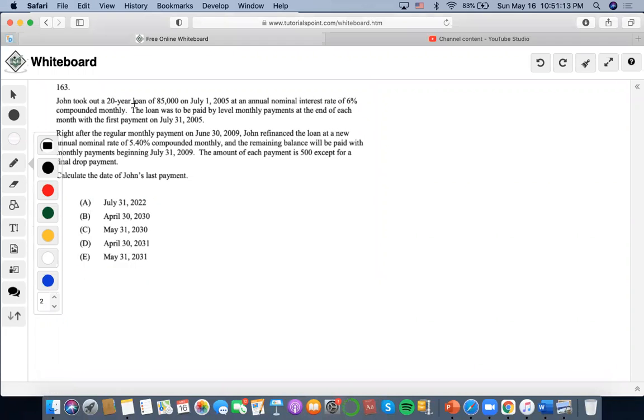So for this problem, it says John took out a 20-year loan of $85,000 on July 1st, 2005, at an annual nominal interest rate of 6% compounded monthly. So 6 divided by 12 is 0.5%.